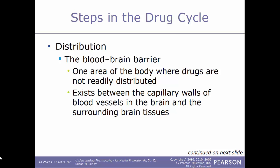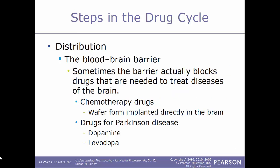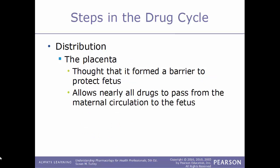The blood-brain barrier is an area where drugs are not readily distributed. It exists between the capillary walls of brain blood vessels and surrounding brain tissue, involving special nerve cells called astrocytes. Some drugs can pass through and exert therapeutic effects, others pass through and cause side effects, and some are completely unable to cross. Sometimes this barrier blocks drugs needed to treat brain diseases — such as chemotherapy drugs — and a workaround is to implant a wafer form of the drug directly into the brain. Drugs like dopamine and levodopa for Parkinson's disease also cannot cross the blood-brain barrier.